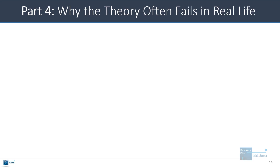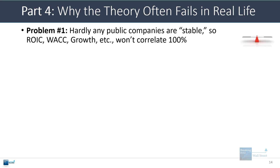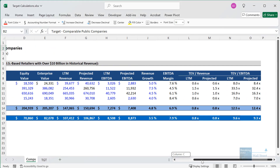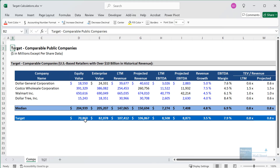Valuation multiples are often less useful in real life than the theory suggests. First, there's the stability problem — hardly any public companies have metrics that stay the same over time, so even if there is correlation between higher ROIC and higher multiples, it won't be strong. Second, the set of comparable companies is sometimes not great — as we saw with Target, the comps were just telling us that bigger companies trade at higher multiples, which isn't very useful.